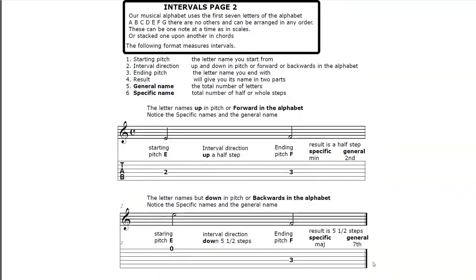Intervals page two. Our musical alphabet uses the first seven letters of the alphabet: A, B, C, D, E, F and G. There are no others and they can be arranged in any order. They can have sharps or flats added to them also. These can be one note at a time as in scales, or stacked one upon another in chords.